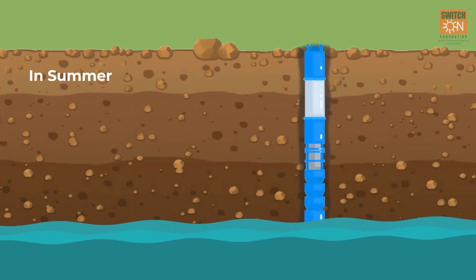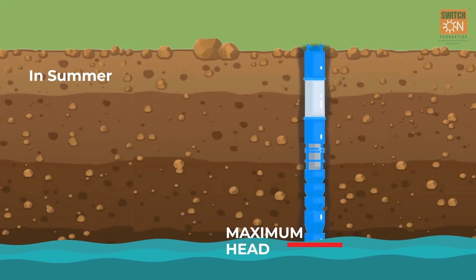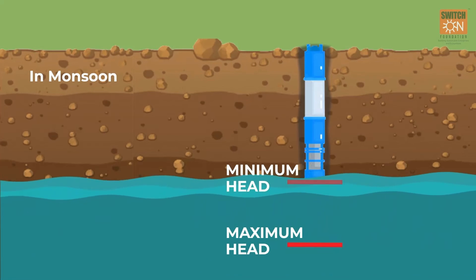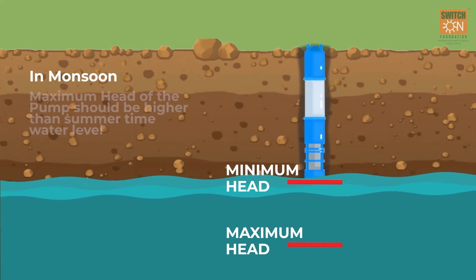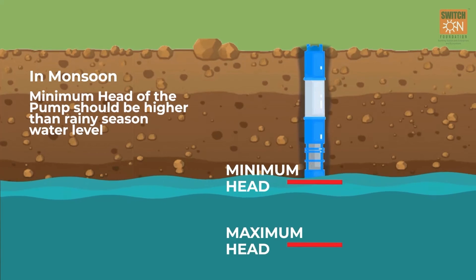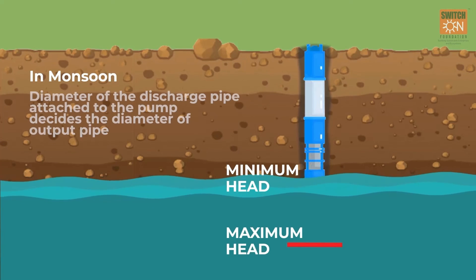Daily average water requirement is considered to decide the sizing of the pump required. In summers, the water level goes down, meaning maximum head, while during monsoons the water level goes up to minimum head. The maximum head of the pump should be higher than the summertime water level, and the minimum head should be higher than the rainy season water level. The diameter of the discharge pipe attached to the pump decides the diameter of the output pipe.